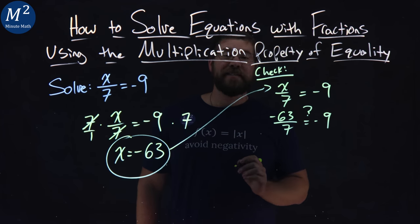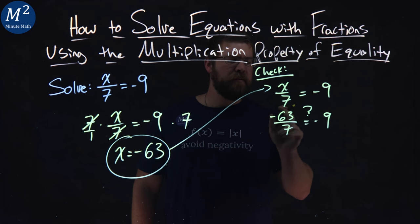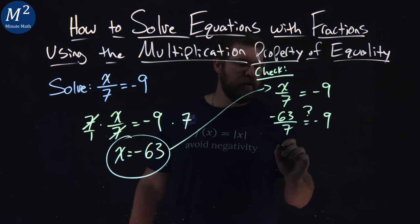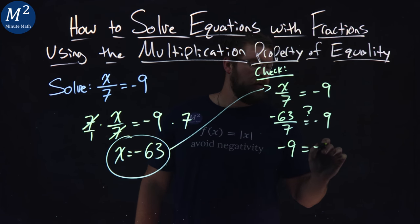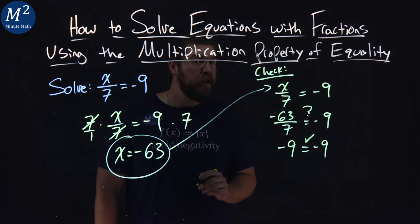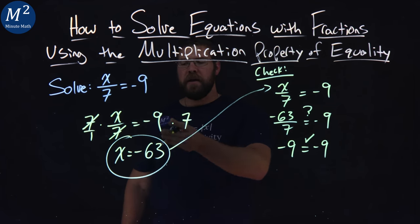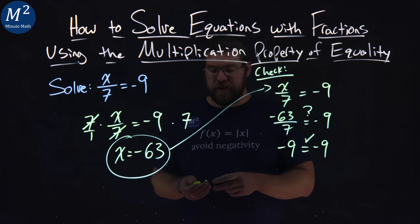Are the left and right-hand sides equal? Let's check it. Negative 63 divided by 7 is negative 9. And the left and right-hand sides are equal, confirming our solution here. x equals negative 63.